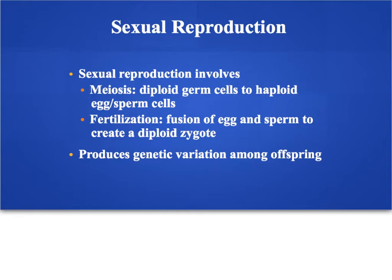For now, don't worry about those words. Just know that in meiosis we're going to be creating egg and sperm. Then in the second step of sexual reproduction we're going to have fertilization — the sperm fertilizes the egg and we get a zygote. A zygote is just a fancy word for the cell formed when a sperm fertilizes an egg, and because genes from two different individuals come together, we produce genetic variation among our offspring.